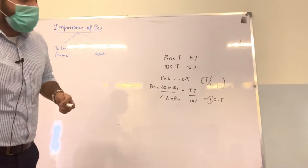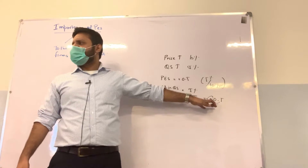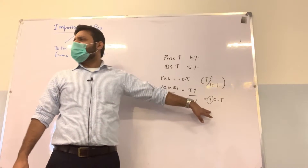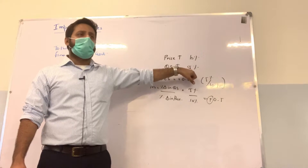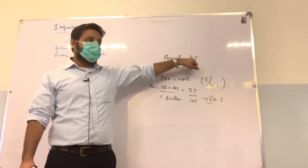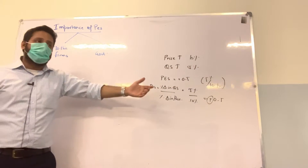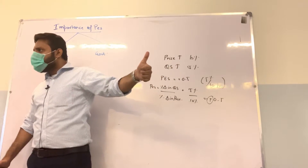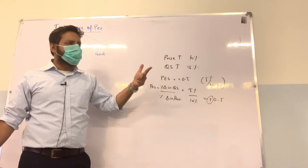Why was Mehek only able to increase quantity supplied by 5% on a 10% increase in price? Simply because the supply is inelastic. Maybe she does not have the resources to increase supply that much. Maybe she does not have spare capacity — she may be operating in the short run where resources are fixed and cannot be increased.